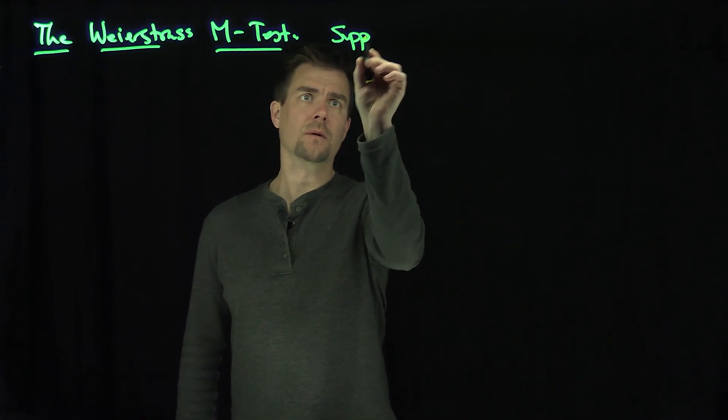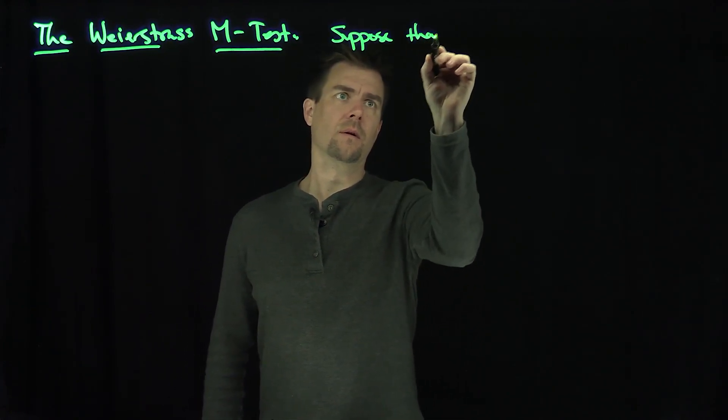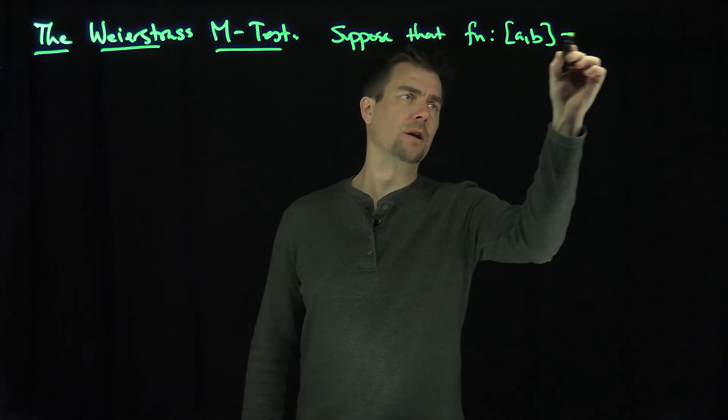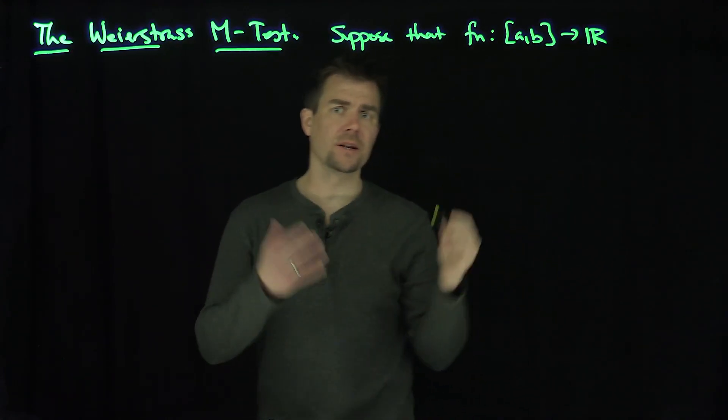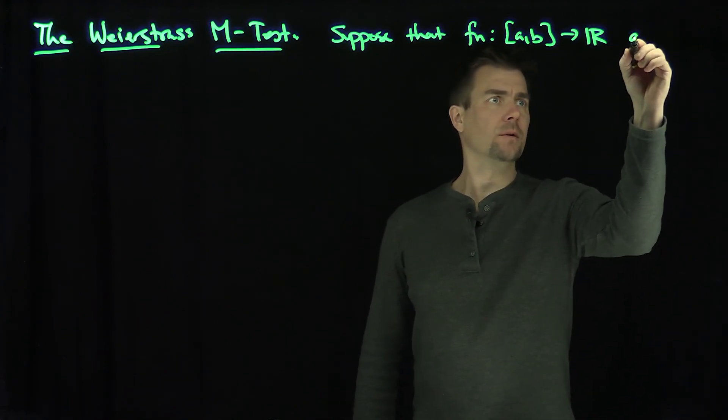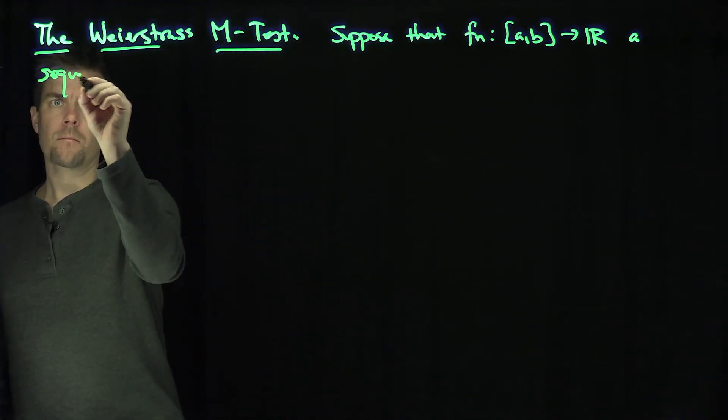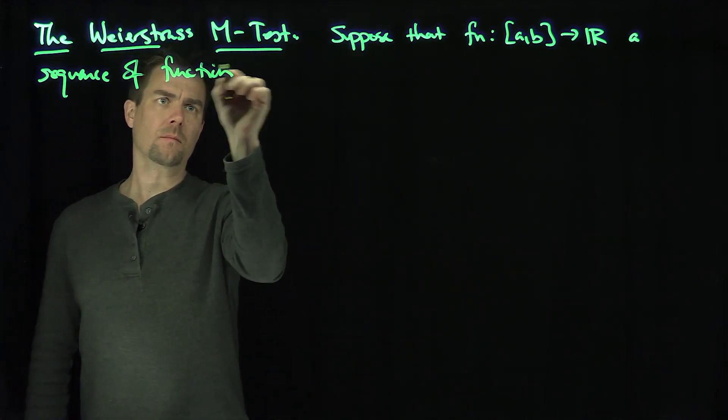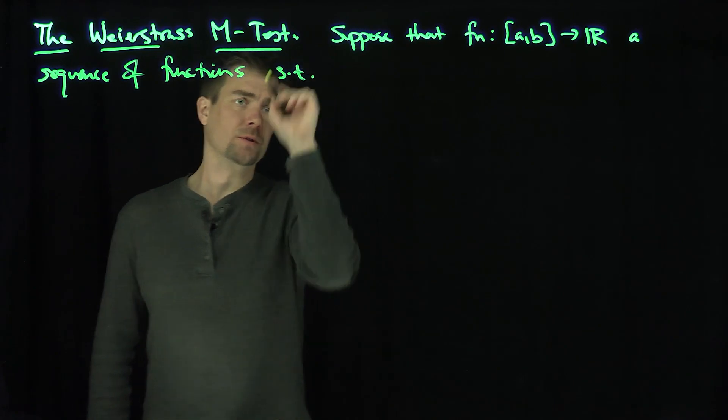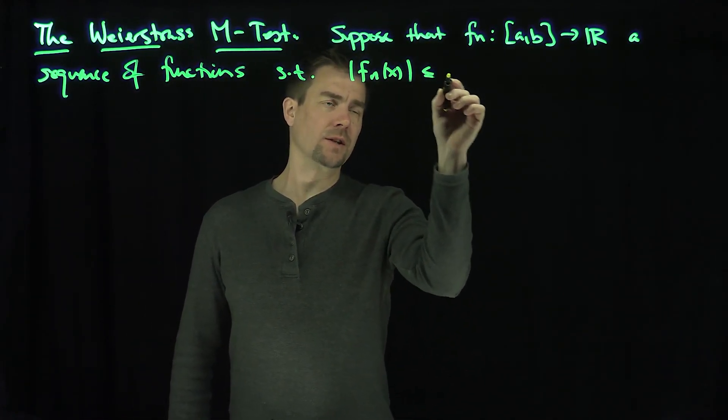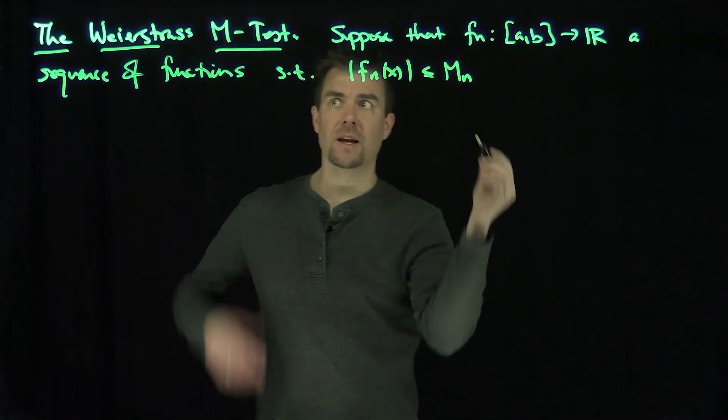It says, suppose that f_n maps an interval (a,b) into R. It doesn't have to be an interval (a,b), it can be any set, but this is just for simplicity. It's a sequence of functions such that |f_n(x)| is less than or equal to some numbers m_n, hence the name M-test.